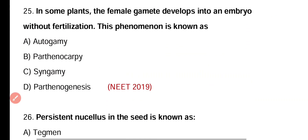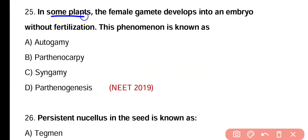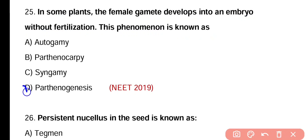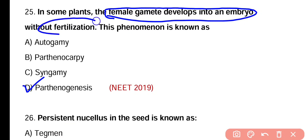Question number twenty-five. In some plants, female gamete develops into an embryo without fertilization. This phenomenon is known as autogamy, parthenogamy, syngamy, or parthenogenesis. Correct answer is option D. In some plants, the female gamete develops into embryo without fertilization — this is known as parthenogenesis.